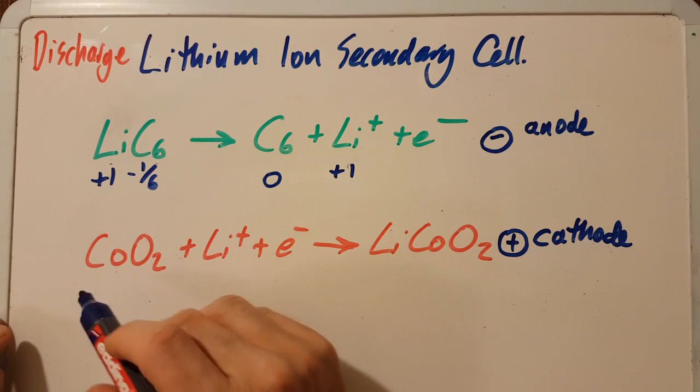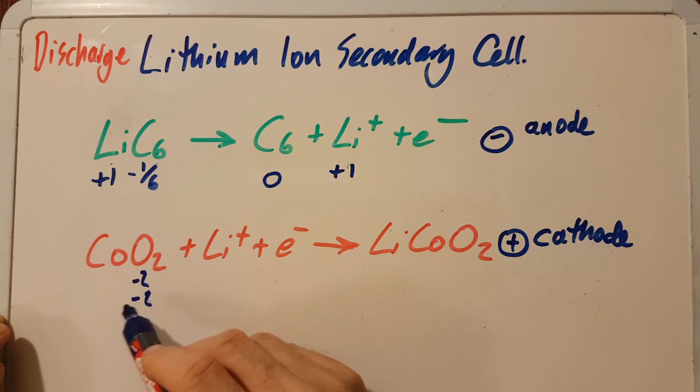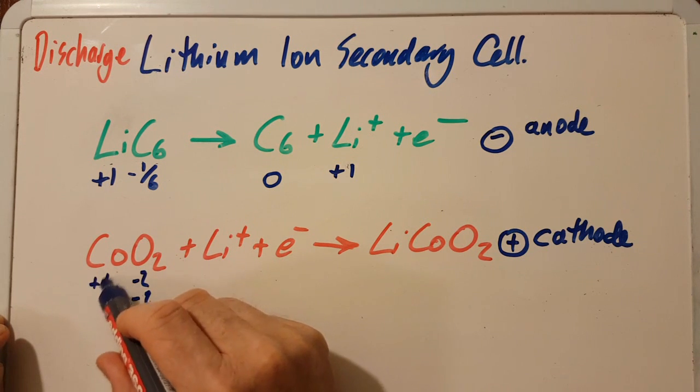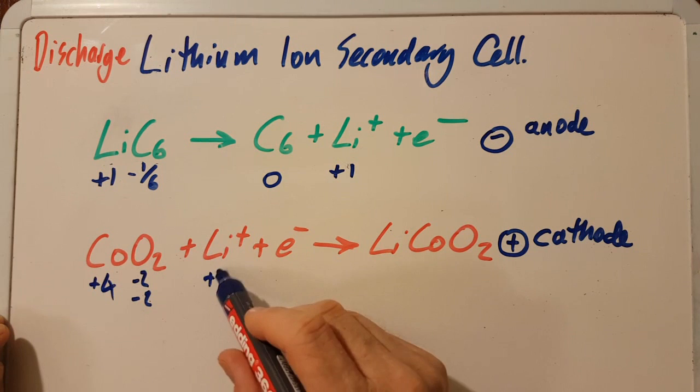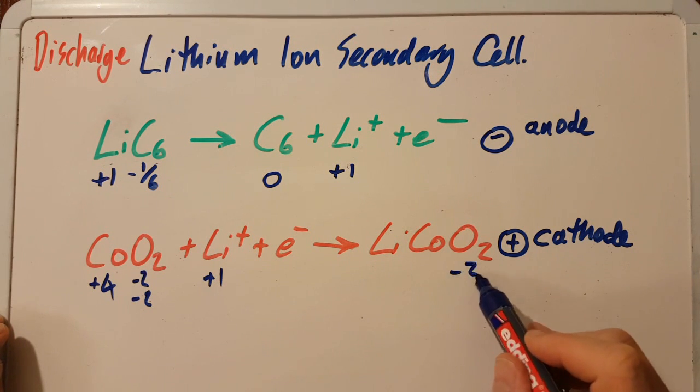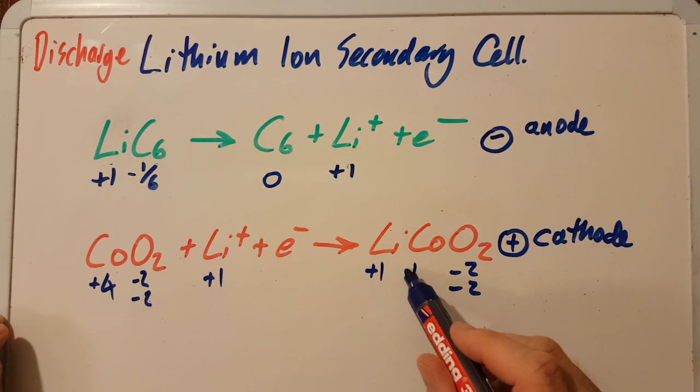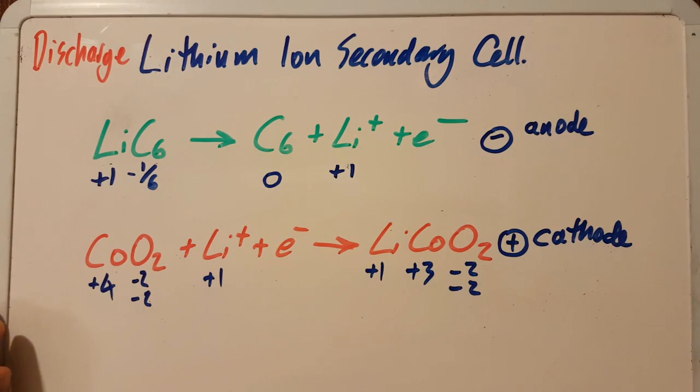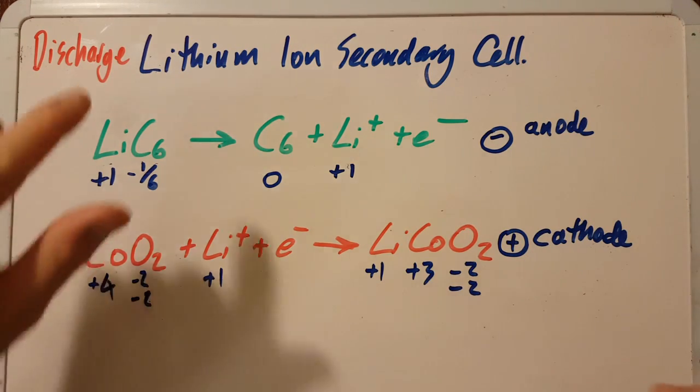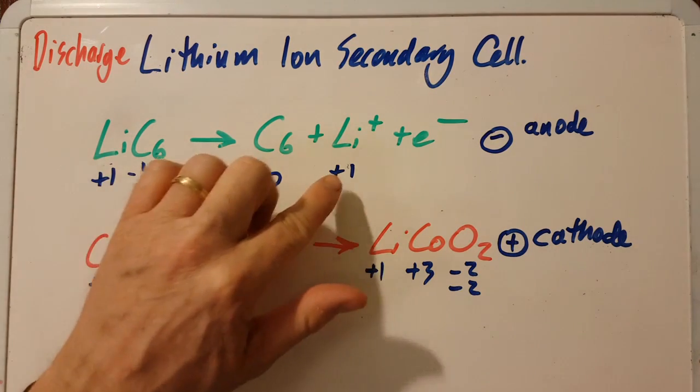Moving down to the cathode, there's cobalt-four-oxide. Oxidation state of oxygen in compounds is minus two, that's plus four. Lithium's plus one again. So that's minus two, minus two. Lithium is still plus one, and cobalt plus three. So there's the strange thing about a lithium-ion battery.